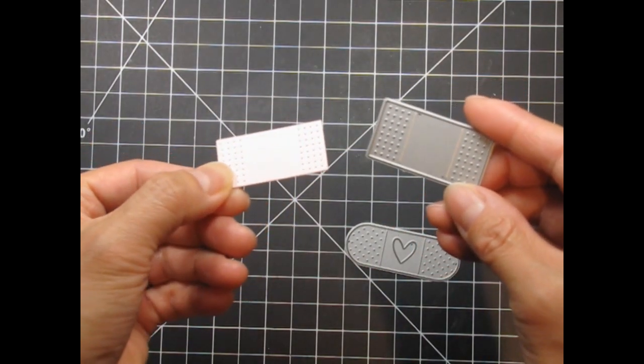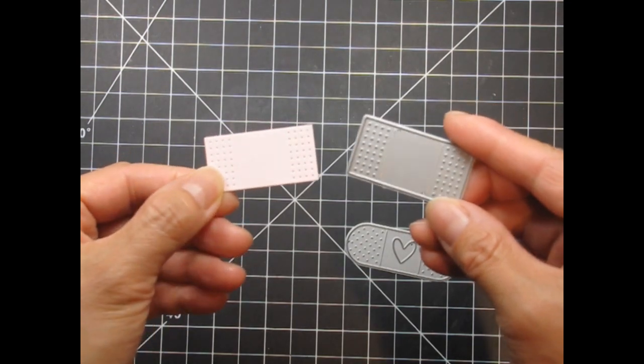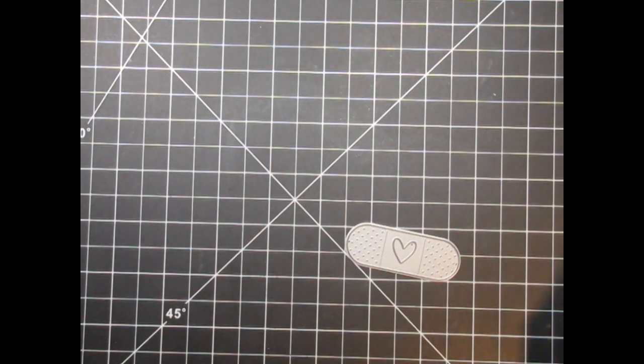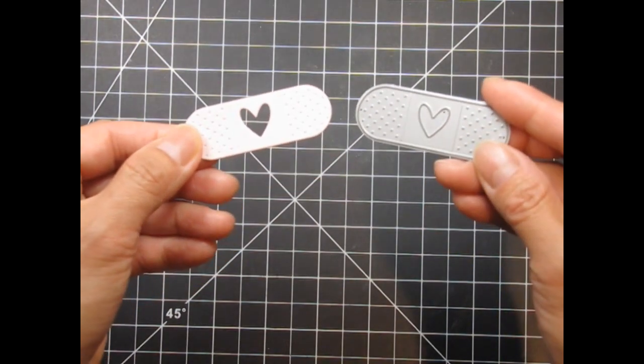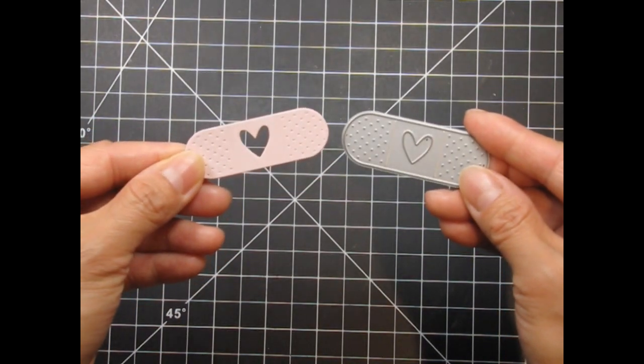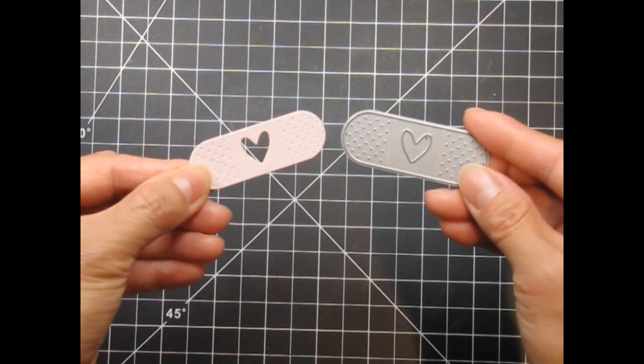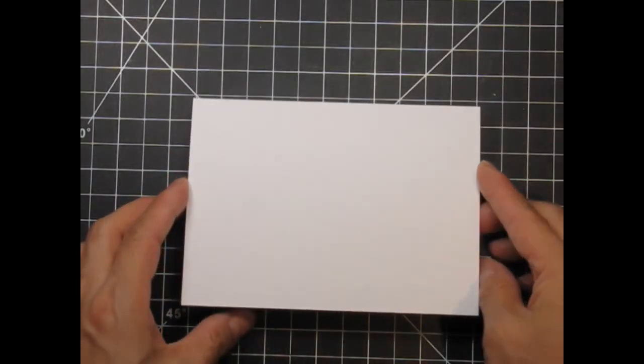I've die cut my Band-Aids from a greyish peachy pink card stock that looks like real Band-Aids. They would also look very realistic die cut from craft card stock. This last Band-Aid with the die cut heart in the center is the one I'll be using on my card. I love that you can use a different color for the heart.